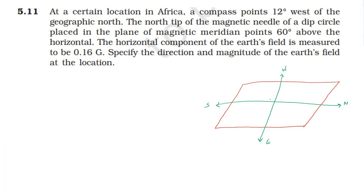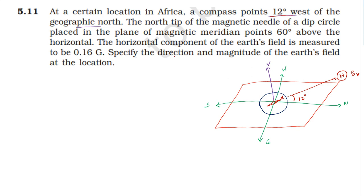The compass points 12 degrees west of the geographic north. When we place the magnetic compass on the horizontal plane, the magnetic needle aligns in the direction 12 degrees west of geographic north. The horizontal field direction is along the magnetic meridian, so the horizontal component of the field is in that direction.